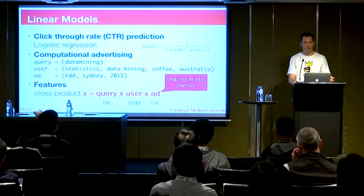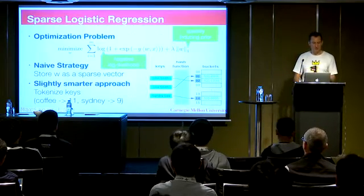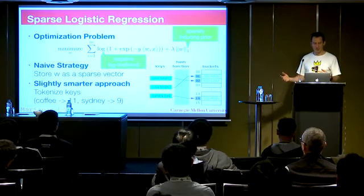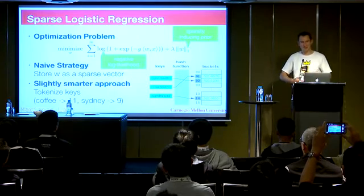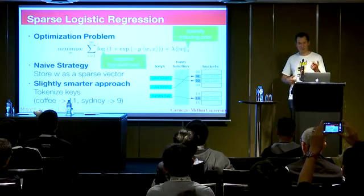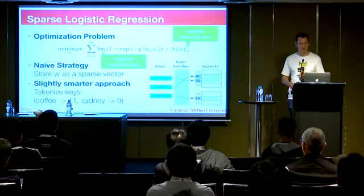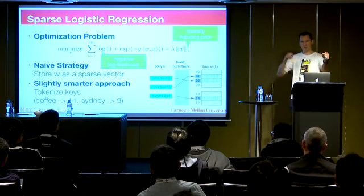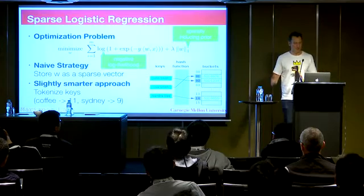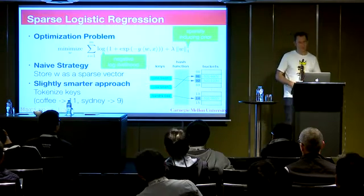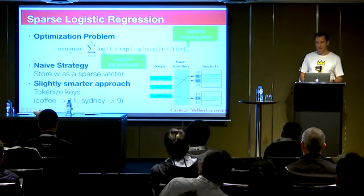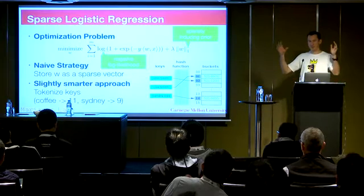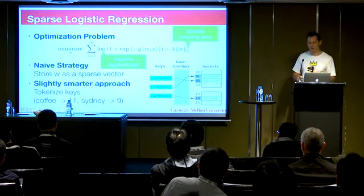Obviously not all those combinations ever occur, so you could store everything as a sparse vector and keep the keys around. Or you could do tokenization — maybe the token 'coffee' gets ID 11 and 'Sydney' gets ID 9, giving a vector with 1s at positions 9 and 11. Then you solve the optimization problem. With an L2 penalty — squared norm, weight decay — everything's good and you can use hash kernels.